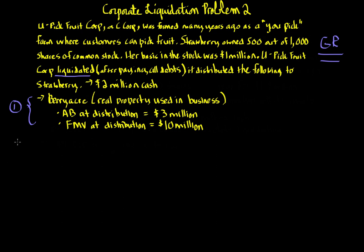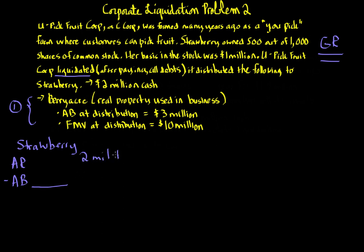We first determine the consequences to the shareholder. Strawberry is the shareholder, so we apply section 331 and 336: amount realized minus adjusted basis under section 1001 rules. The amount realized is the amount Strawberry actually receives — $2 million of cash plus the fair market value of Berry Acre, which is $10 million. So the amount realized totals $12 million.